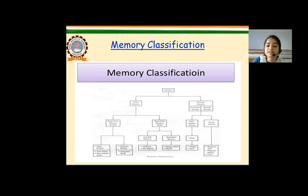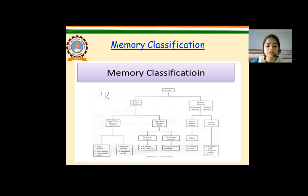The size of a memory chip is specified in terms of bits. If we say that the size of a memory chip is 1K, it specifies how many number of bits the memory can store. If the size of a memory chip is 1K, it means that the memory chip can store 1024 number of bits. In this way the memory chip size is specified.